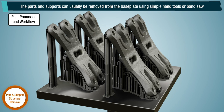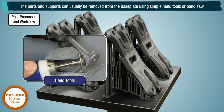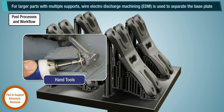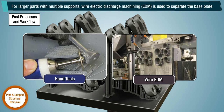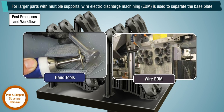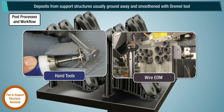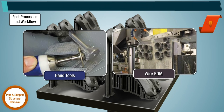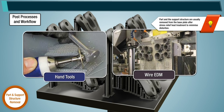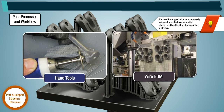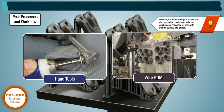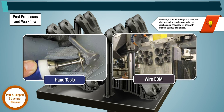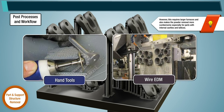Parts and supports can usually be removed from the base plate using simple hand tools or a band saw. For larger parts with multiple supports, wire electro-discharge machining is used to separate from the base plate. Deposits from support structures are usually ground away and smoothed with a Dremel tool. Note: part and support structure are usually removed from the base plate after stress relief heat treatment to minimize distortion; however, this requires larger furnaces and makes powder removal more cumbersome, especially for parts with internal cavities and lattices.